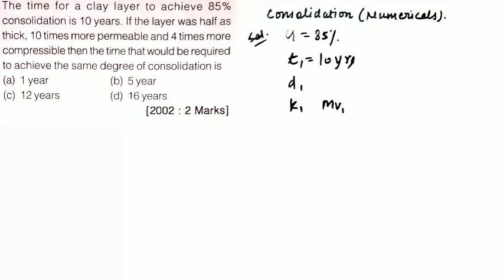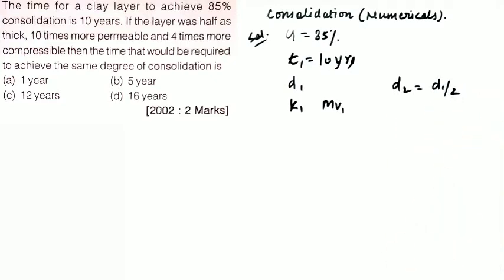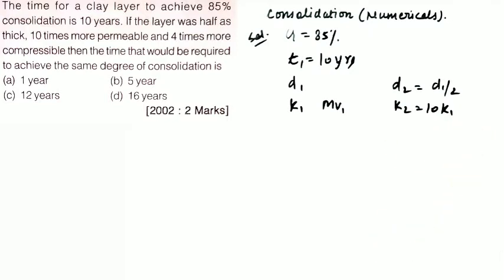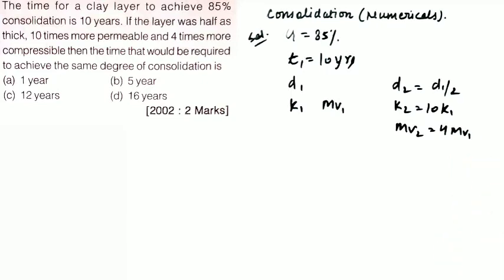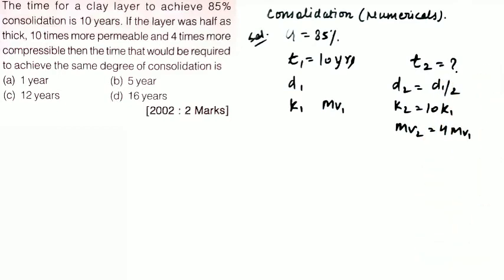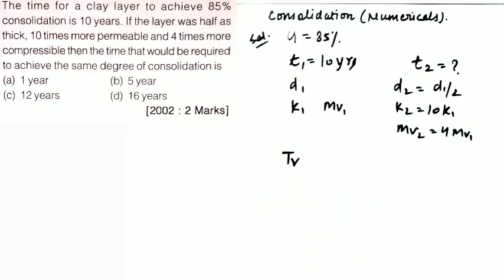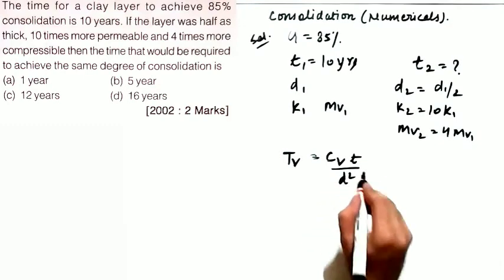Since this is a ratio-based question, I am taking all these in terms of 1 and 2. If the layer was half as thick, the second layer d2 equals d1 by 2, and the permeability k2 is 10 times k1, and 4 times more compressible, so mv2 equals 4 times mv1. We need to calculate t2. We know the formula for tv, and since the degree of consolidation is 85% in both cases, the time factor tv will be the same in both cases. tv equals cv·t divided by d².